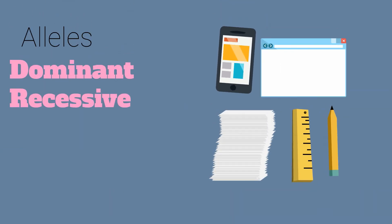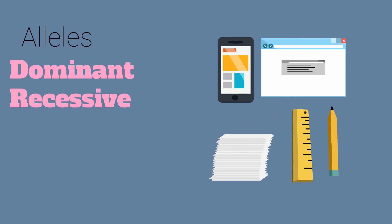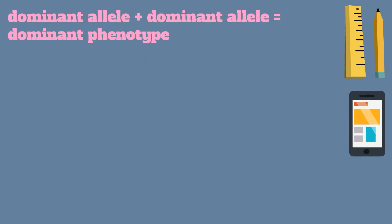Alleles are described as either dominant or recessive, depending on their associated traits. When solving Punnett squares, keep the following in mind. A dominant allele plus a dominant allele equals a dominant phenotype, and that would be homozygous because both alleles are the same.